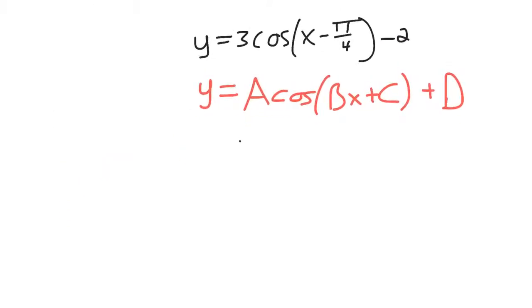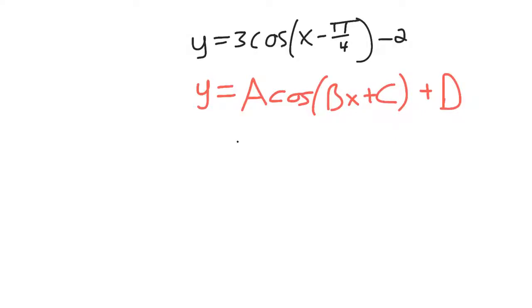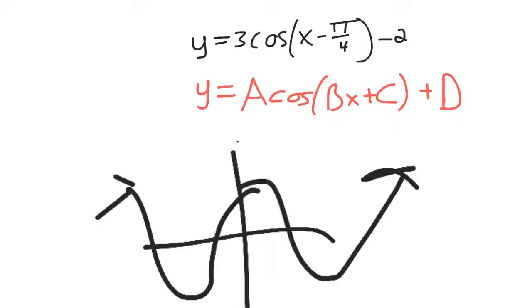So let's start with the location of our starting point. Cosine of x looks like this. When it's unchanged, it starts at positive 1, goes down to negative 1, then back up to positive 1, then repeats.